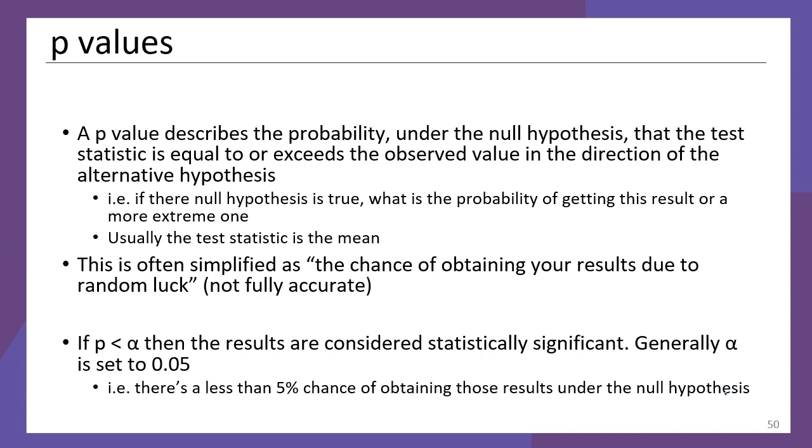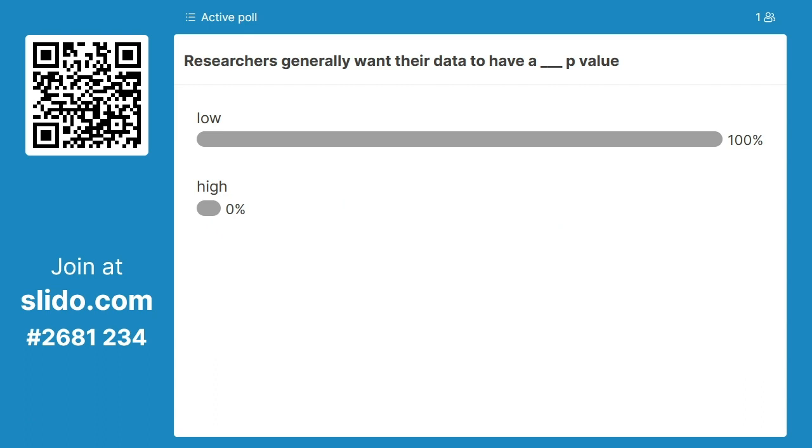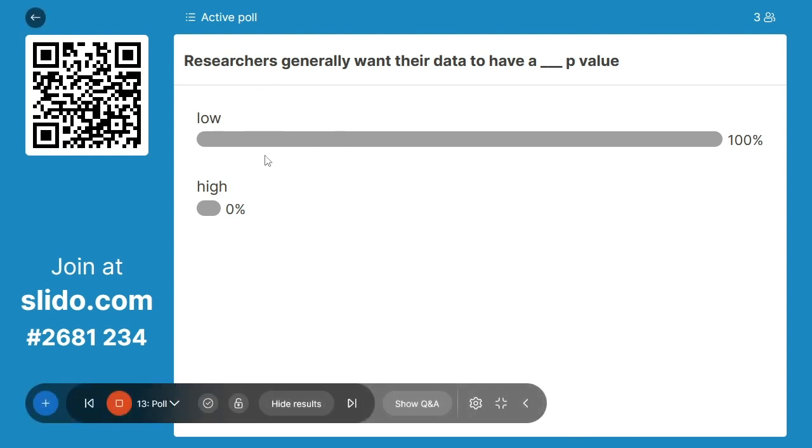This one should be a pretty quick poll. Researchers, generally, do they want their data to have a high or a low p-value? Remembering that if our p-value is below alpha, then we get to say our results are significant, reject the null hypothesis, accept the alternative hypothesis. Right, we've got our first answer in. Yep, we're in agreement here. Absolutely, we have a low p-value is generally what researchers want.